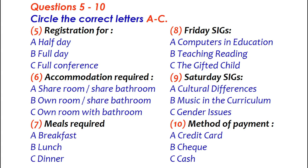Will you be requiring accommodation while you're here in Melbourne? Yes, I suppose I will. What's available? Well, we have several levels of accommodation. You can share a room with another student for $25 a night. Or you can have your own room but share the bathroom — I believe it's just down the corridor. That's $45. Or you can have a single room with your own bathroom.